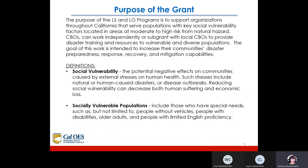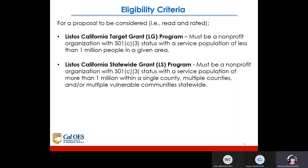Socially vulnerable populations include those with special needs, such as but not limited to people without vehicles, people with disabilities, older adults, and people with limited English proficiency. The eligibility criteria for the Listos Target Grant: must be a non-profit organization with 501(c)(3) status with a service population of less than 1 million people in a given area. For the Statewide Grant LS Program, must be a non-profit organization with 501(c)(3) status with a service population of more than 1 million within a single county, multiple counties, and/or multiple vulnerable communities statewide.